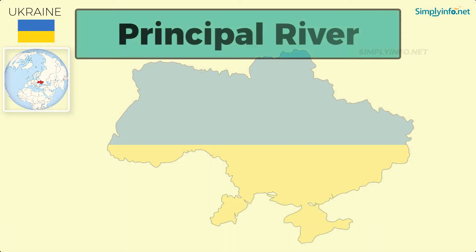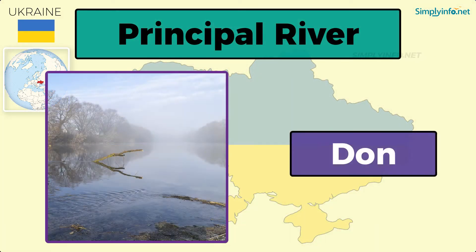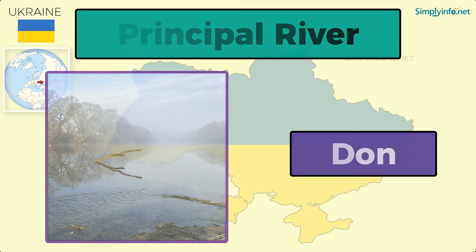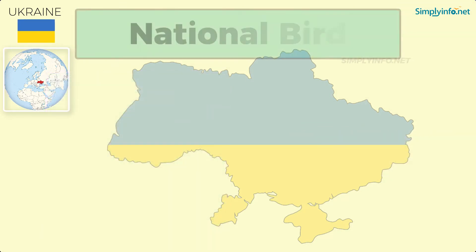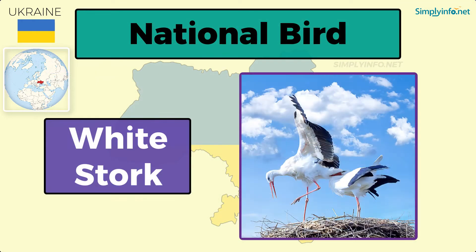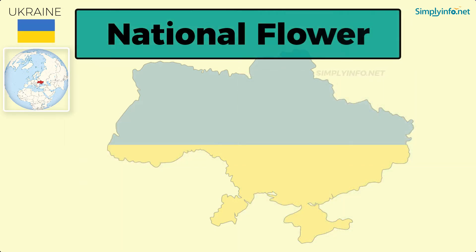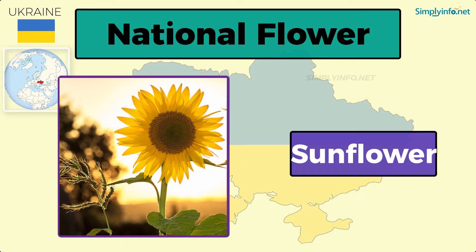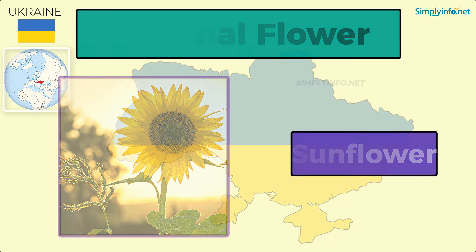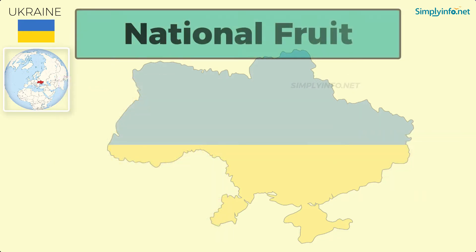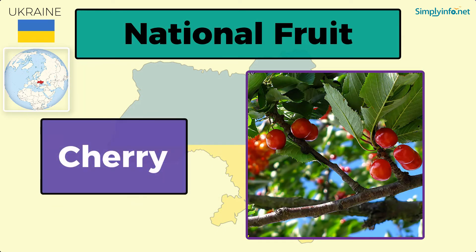Principal river: Don. National bird: White Stork. National flower: Sunflower. National fruit: Cherry.